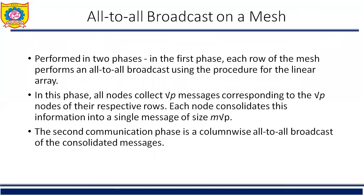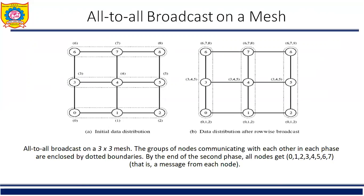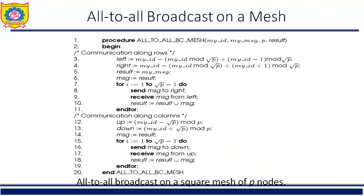All-to-all broadcast on mesh is performed in two phases. In the first phase, each row of the mesh performs an all-to-all broadcast using the procedure for linear array, and all nodes collect sqrt(P) messages corresponding to the sqrt(P) nodes of their respective rows. Each node consolidates this information into a single message of size M*sqrt(P). The second communication phase is column-wise all-to-all broadcast of consolidated messages. The group of nodes communicating with each other in each phase are enclosed by dotted boundaries. By the end of the second phase, all nodes receive messages from each node labeled 0 through 7.